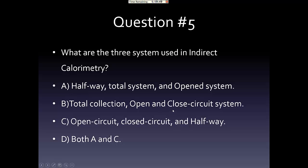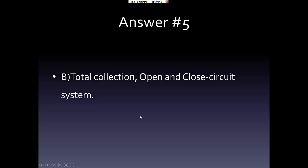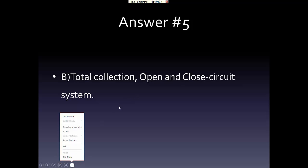Question number five: What are the three systems used in indirect calorimetry? The correct answer is B — total collection system, open circuit, and closed circuit system. And that is the end of my presentation.